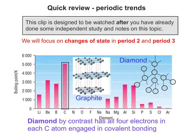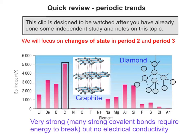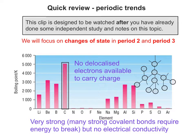Diamond in comparison has all four electrons in each carbon atom engaged in covalent bonding. In the diagram only some of the atoms are shown for illustration. Diamond is very strong because there are many strong covalent bonds requiring energy to break, but there is no electrical conductivity, because there are no delocalised electrons available to carry charge.